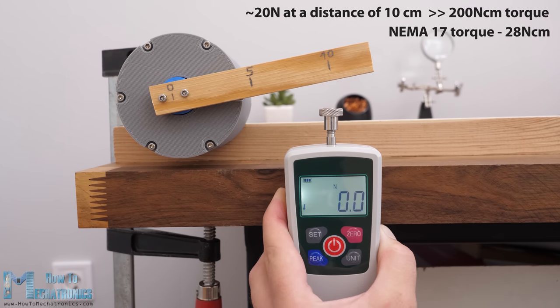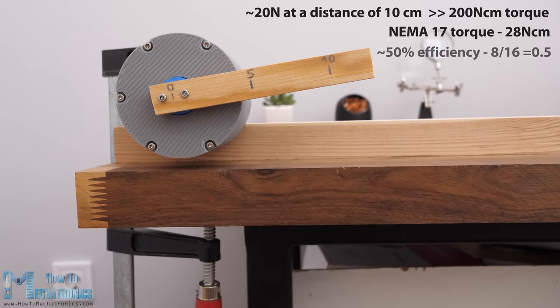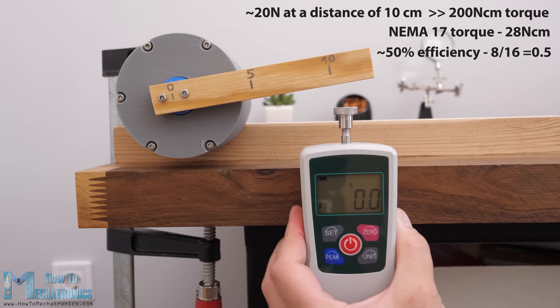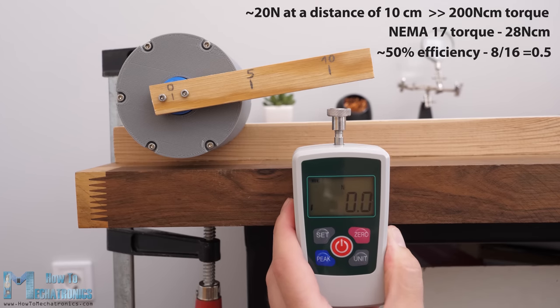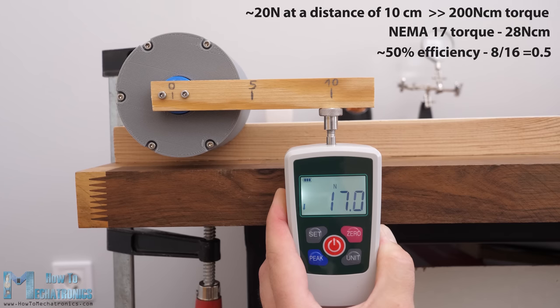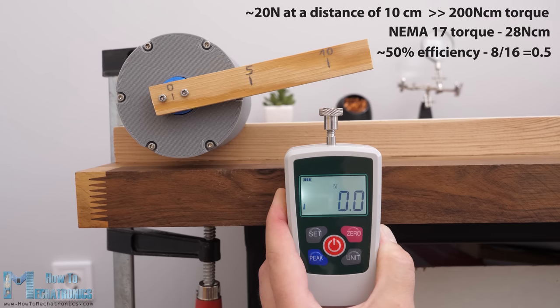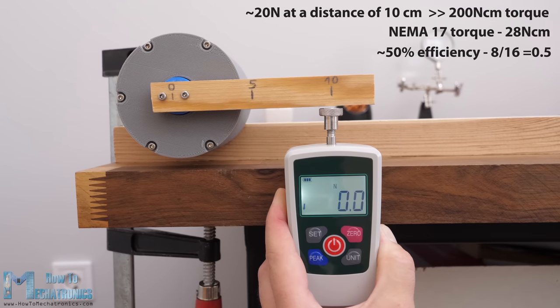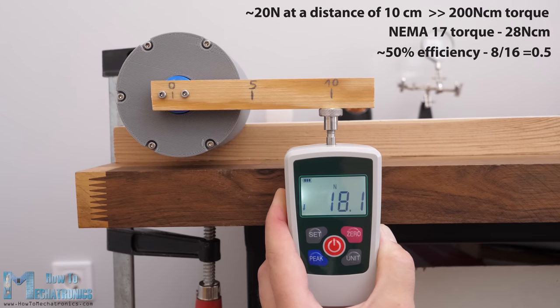That's a very low efficiency of the gearbox of just around 50%. The reduction ratio of the gearbox is 16 to 1 and in ideal conditions we should get 16 times torque increase, but we only got around half of that. I guess there's a lot of friction going on in the gearbox and that's why we lose efficiency.